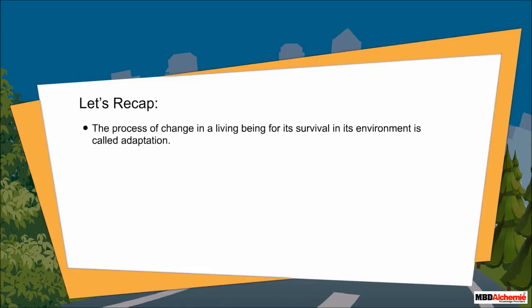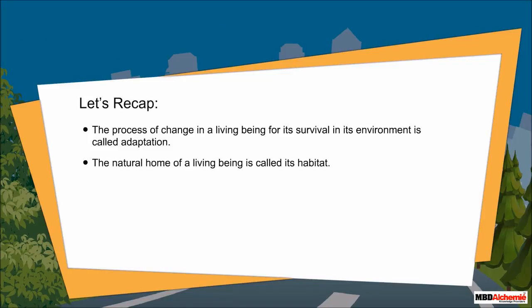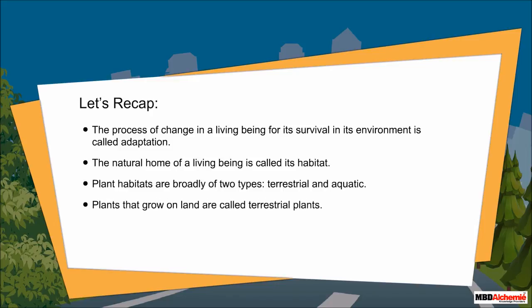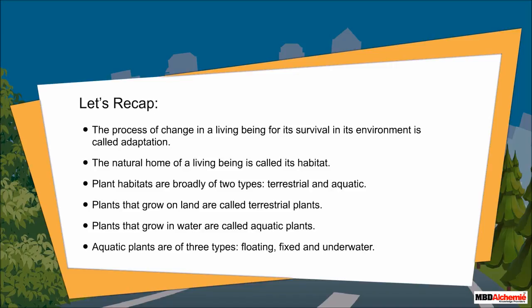Let's recap. The process of change in a living being for its survival in its environment is called adaptation. The natural home of a living being is called its habitat. Plant habitats are broadly of two types: terrestrial and aquatic. Plants that grow on land are called terrestrial plants. Plants that grow in water are called aquatic plants. Aquatic plants are of three types: floating, fixed, and underwater.